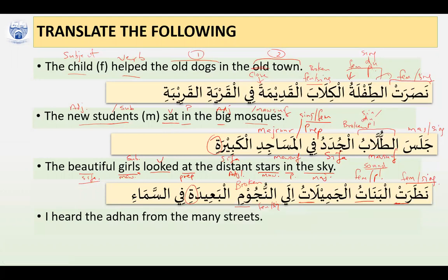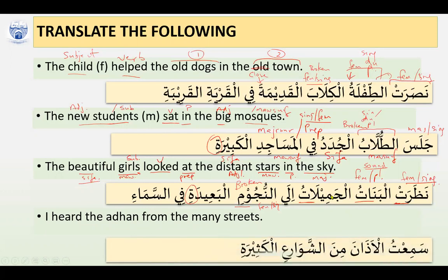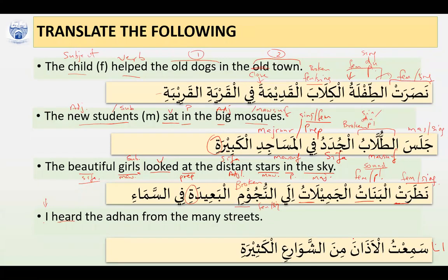'I heard the adhan from many streets.' Who heard? I heard — so it's a verbal sentence. The subject 'I' is not explicitly stated; it is understood within the verb. The Fa'il is hidden, understood to be Ana (I). The azan is the Maf'ulun Bihi — the object — existing in the case of Nasb by Fatha.